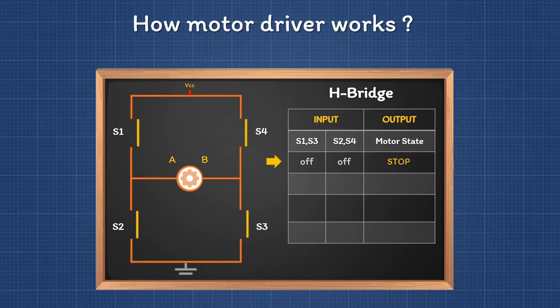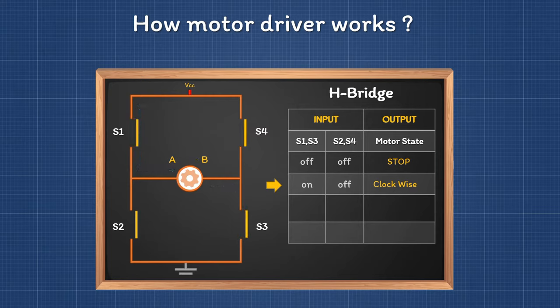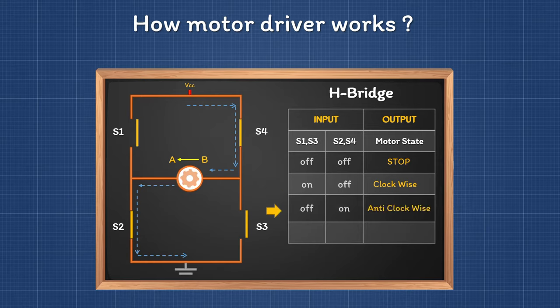When we turn S1 and S3 on, current flows from VCC to ground through S1, the motor, and S3 — the current on the motor will be in the A-to-B direction. When we turn S1 and S3 off and turn S2 and S4 on, current flows from VCC to ground through S4, the motor, and S2 — the current on the motor will be in the B-to-A direction and the motor will rotate anti-clockwise.